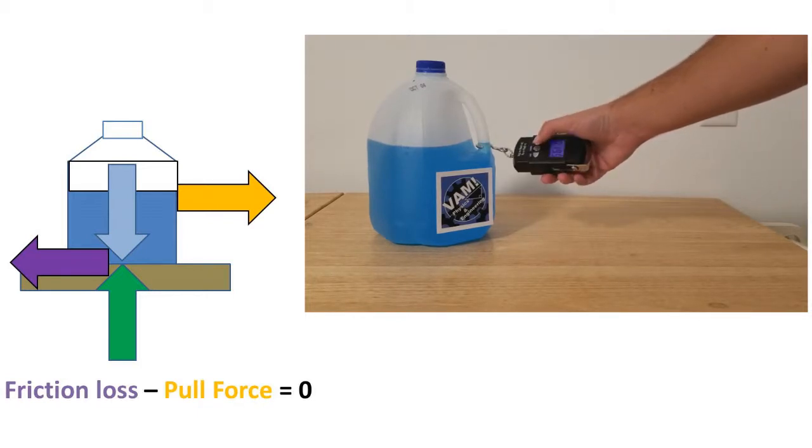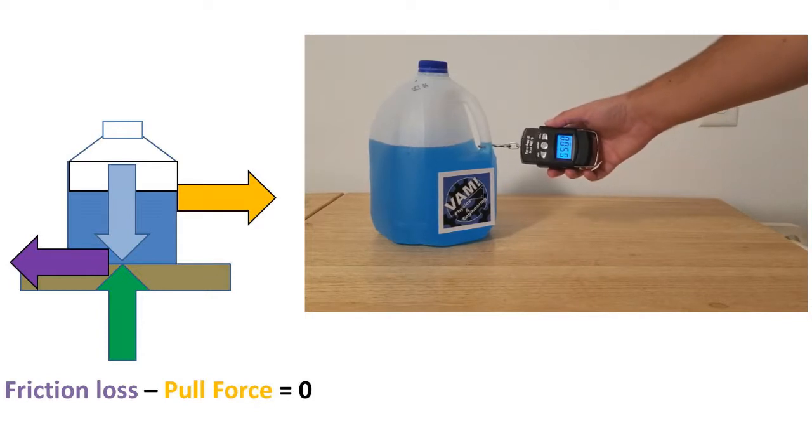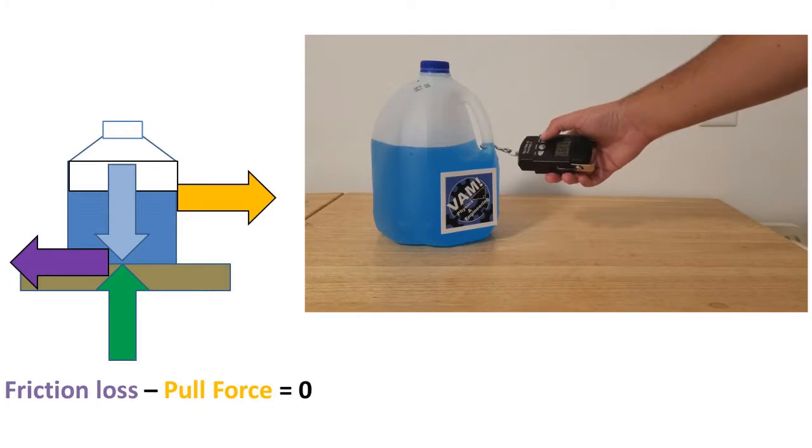However, we are interested in the force needed right before the jug begins to move. This means that the friction loss minus the pull force must equal zero.